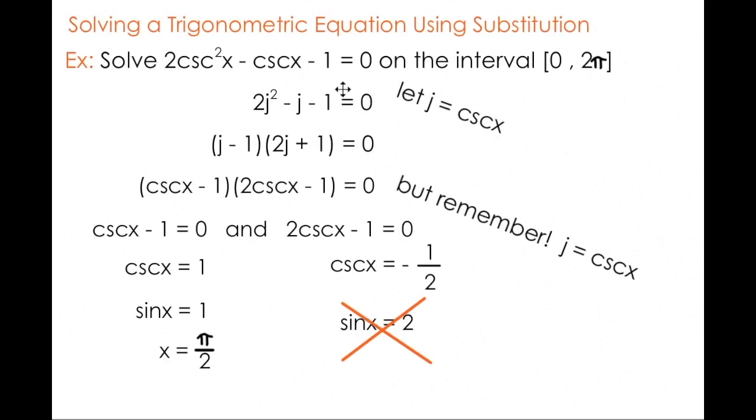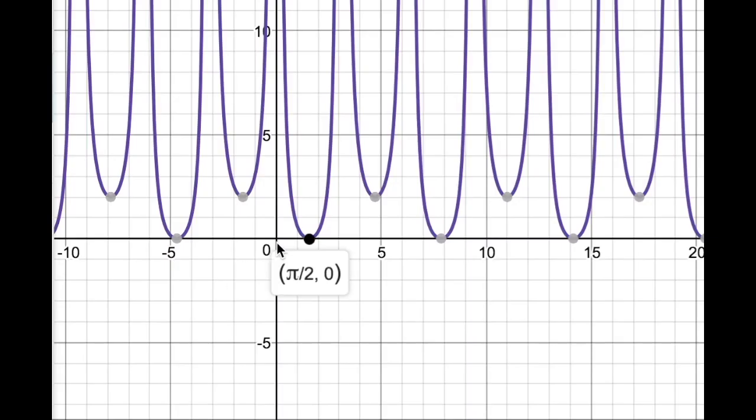If you're curious, type the left side of this equation into a graphing calculator and you can confirm the only solution on [0, 2π] is in fact π/2. This is the only point on this graph where this function is equal to 0 on that interval [0, 2π].